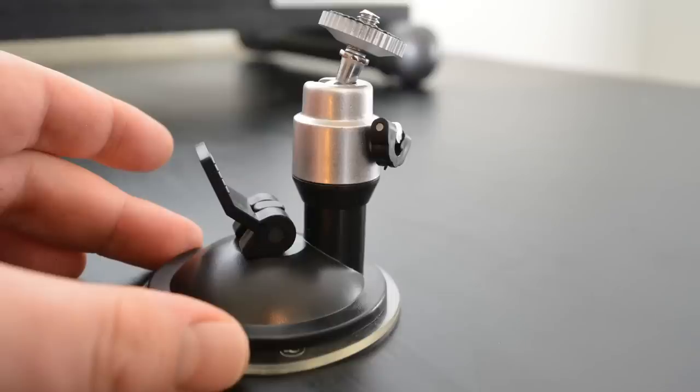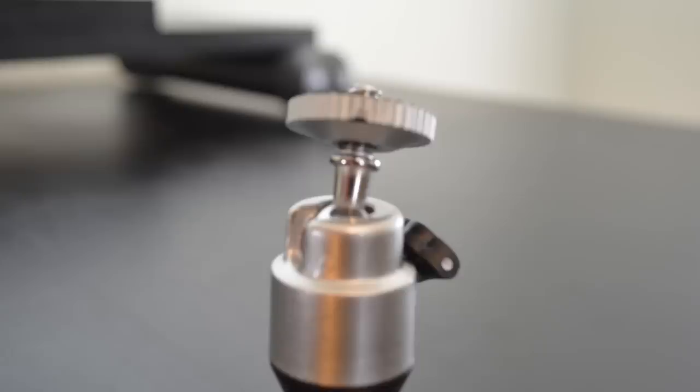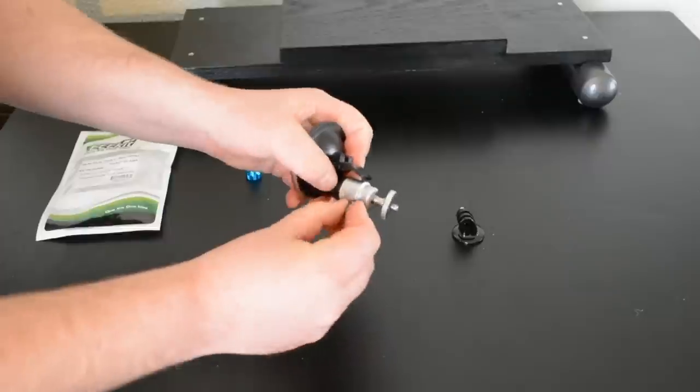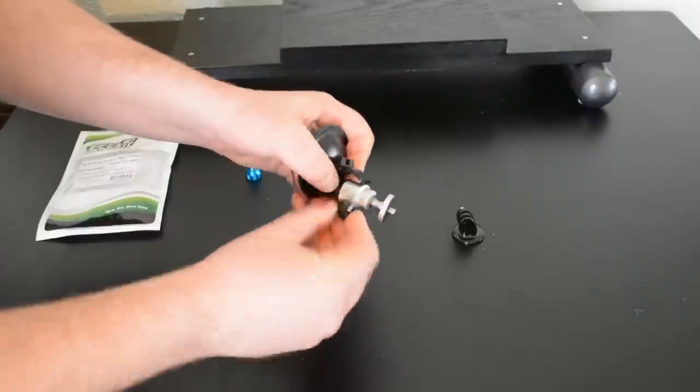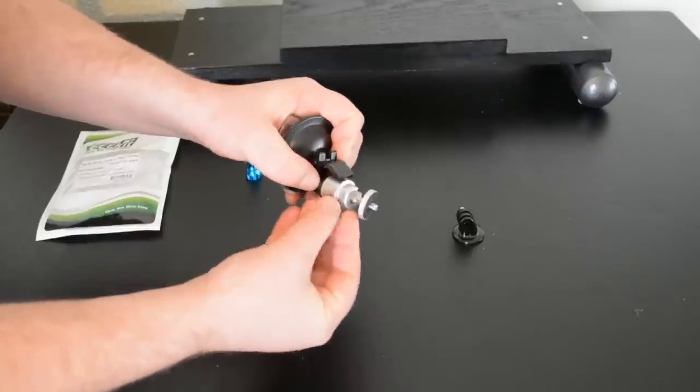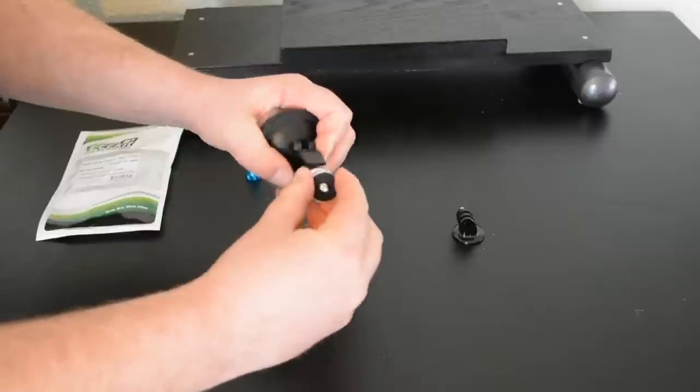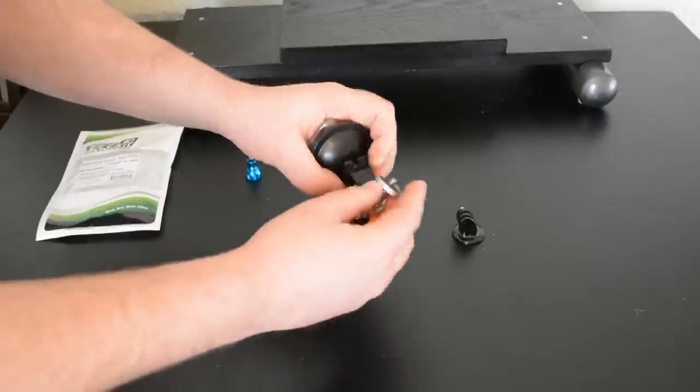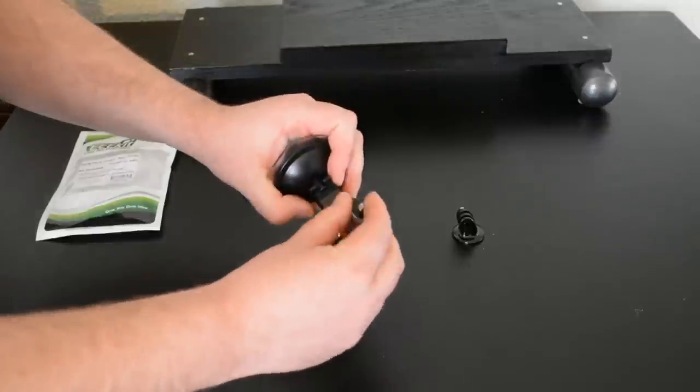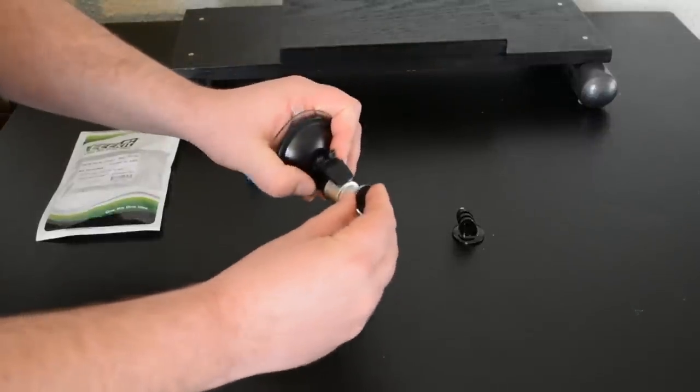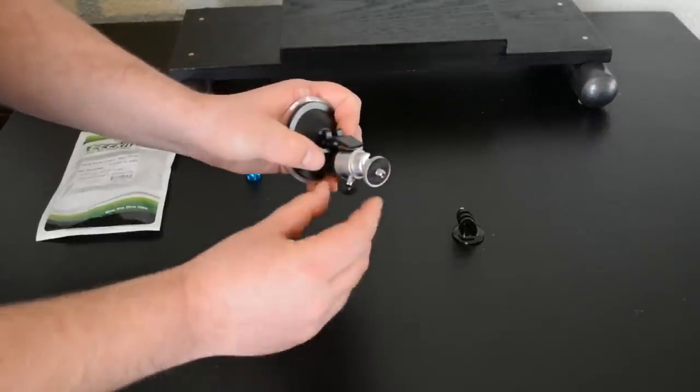So this is basically it. It has a ball mount on the end that loosens, go ahead and loosen that up, and then it allows it to spin down like that, and then have this pivot like that, and then to tighten it.